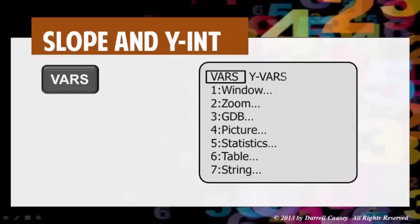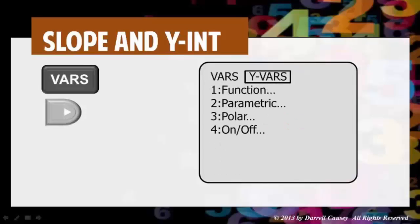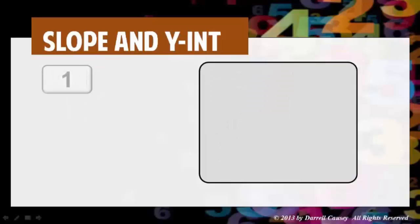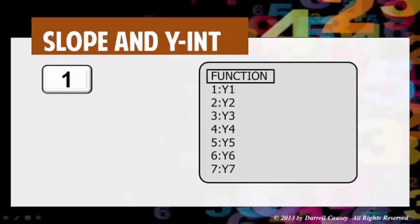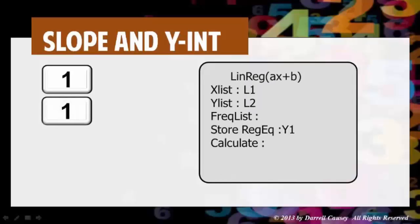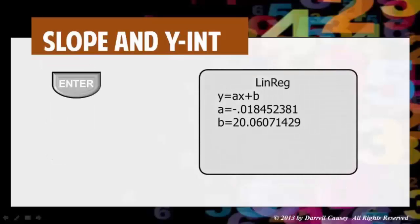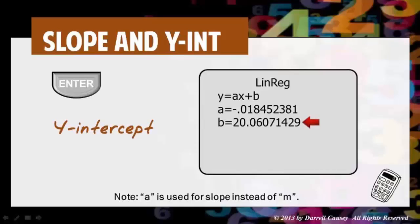Then hit vars. Go over to wise vars. Go down to function, because that's what we're doing. And then in function, go to 1, which is y sub 1, because that's what we're going to use. And notice it'll put y sub 1 in there for you. Now go to calculate, push enter. And it should do your calculations. And you'll get your slope and you'll get your y-intercept. Pretty cool.